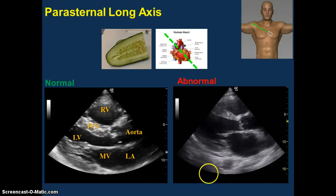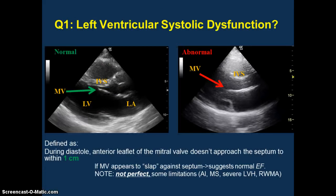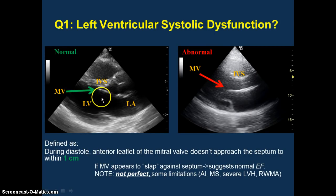Even if you don't have any echocardiography experience, you can tell this is a normal heart, and this is obviously a very sick heart. We're going to pay attention to only two things with regards to these echocardiograms. We're going to look for evidence of left ventricular systolic dysfunction, and our surrogate marker for that is going to be focusing purely on the anterior leaflet of the mitral valve. We're going to look to see whether or not it approaches the septum during diastole — the key number to remember is one centimeter.